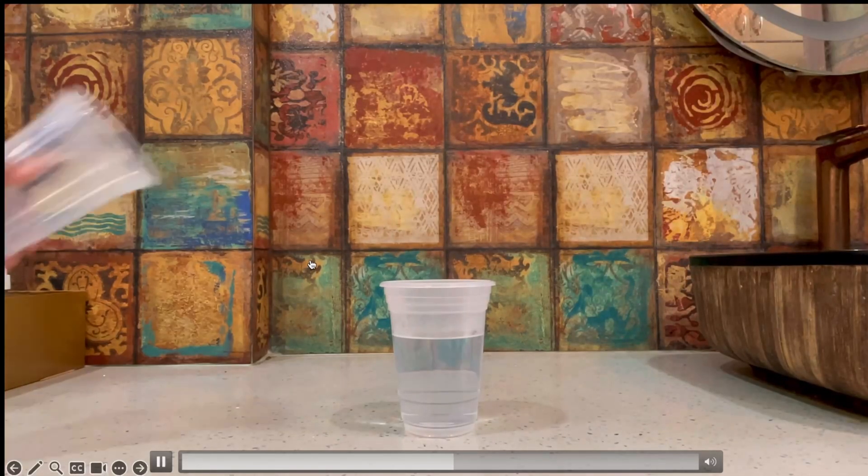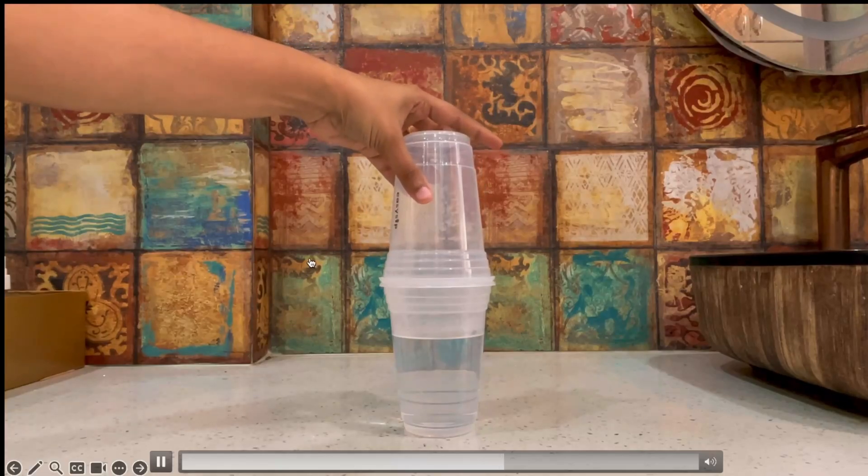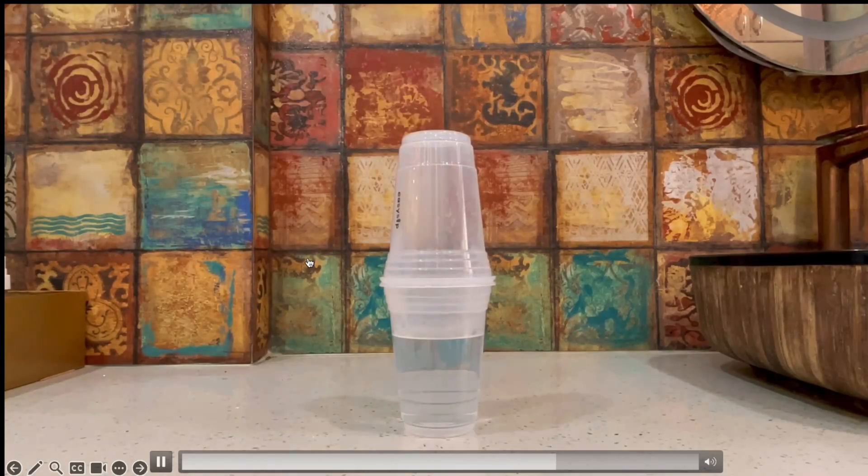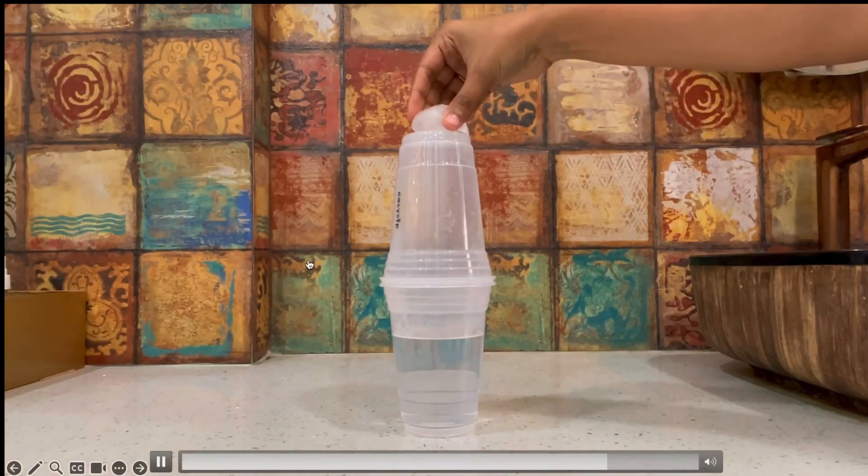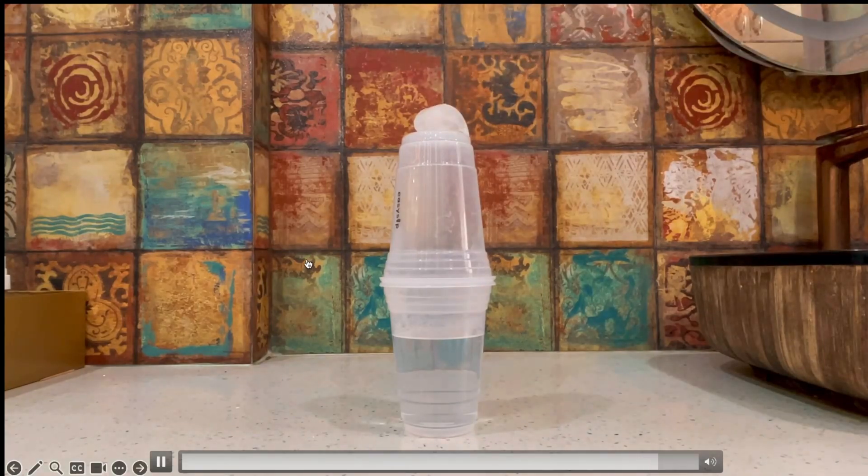Next up we need to flip the second cup upside down and place it on top of the first cup. And then balance an ice cube carefully at the base of the flipped cup.